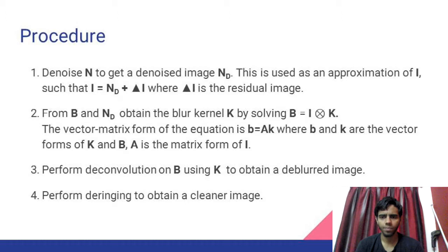The first step is to enhance and denoise the noisy image B to ND. This will be used as an approximate for the true image. Then, the blur kernel K is estimated by solving this system of linear equations in vector and matrix form B equal to AK, where A is the matrix form of I. The deblurred image is obtained by performing deconvolution on the blurred image B with the kernel K, followed by deringing to clean up ringing artifacts of deconvolution.